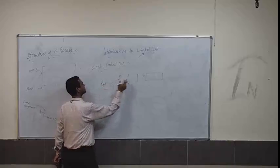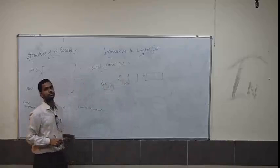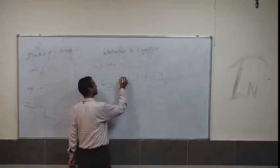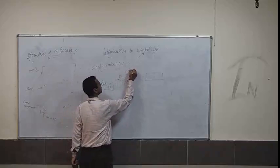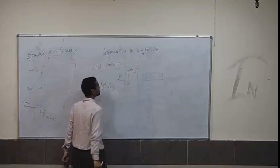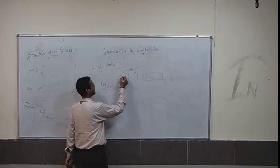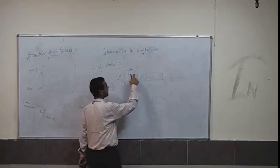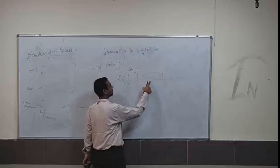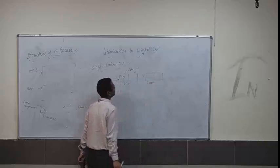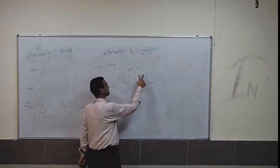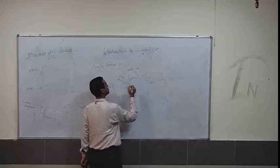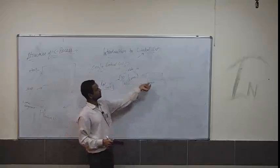Root is a pointer, and it contains the address of this node. This node is at address 1000. This node has two parts: first is the data part containing 10, and second is my pointer part. This pointer contains the memory address of the next node, which is at address 2000. By this way we can connect two nodes to each other.